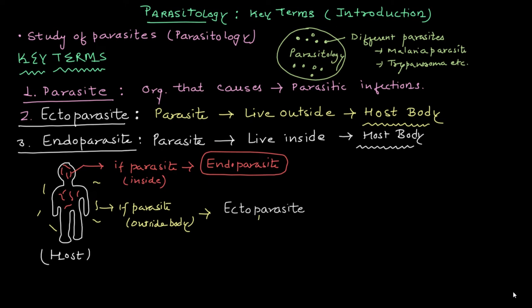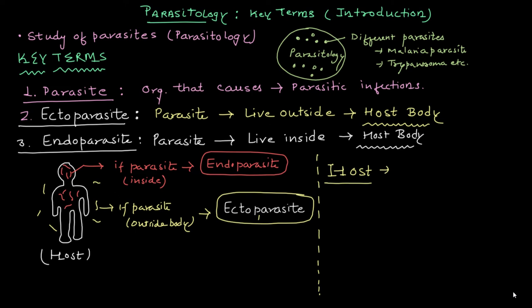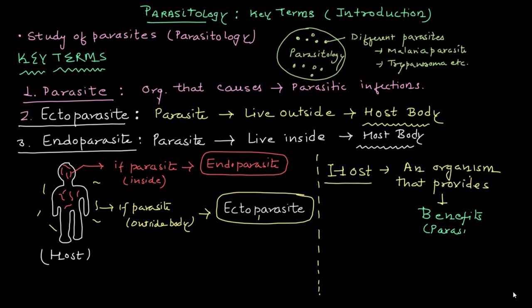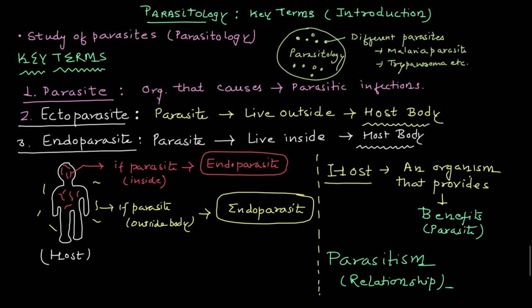Next, let's understand the term host. At one side you have host, another side you have parasite. Host is an organism that provides benefit to the parasite. It is a one-sided relationship where the host is getting exploited by the parasite. This relationship is known as parasitism, where only the host is exploited and the parasite gets all the benefit.